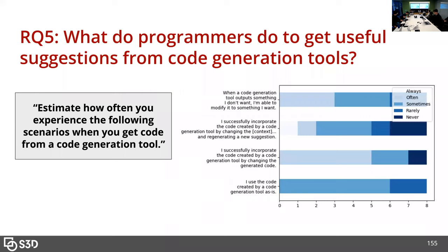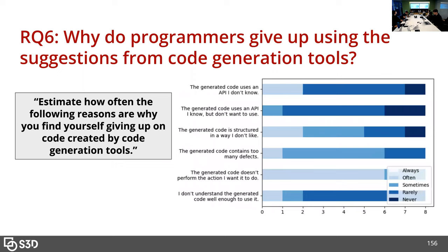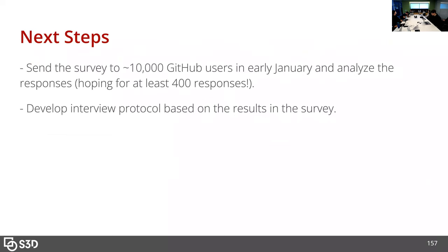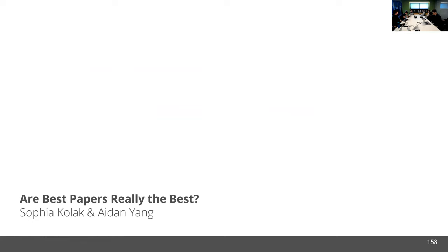In terms of what people do when they get the code, a lot say they don't use it as-is — they do small modifications more than half the time. Why do programmers give up using tools? A lot of it is because the code doesn't do what the developer wants it to do, and it barely seems like usability or understanding the code itself is that big of an issue. Next steps: I'm hoping to release the survey in early January, get at least 400 responses, and then develop an interview protocol to dig into any interesting findings.